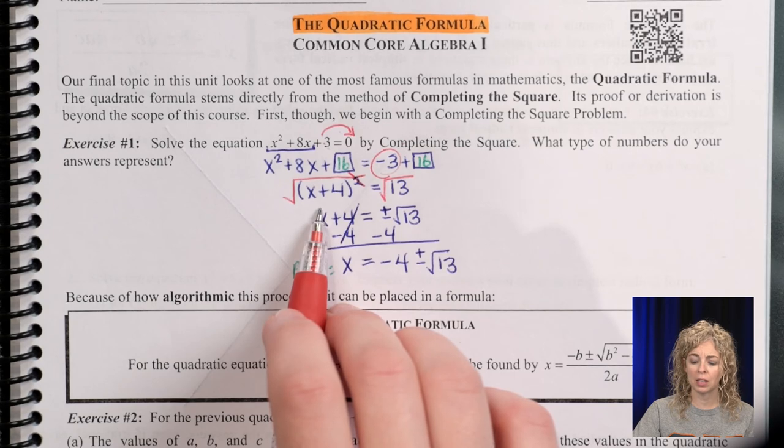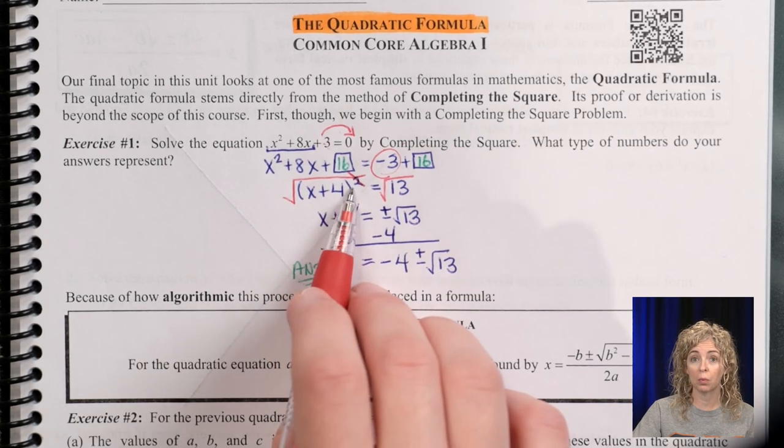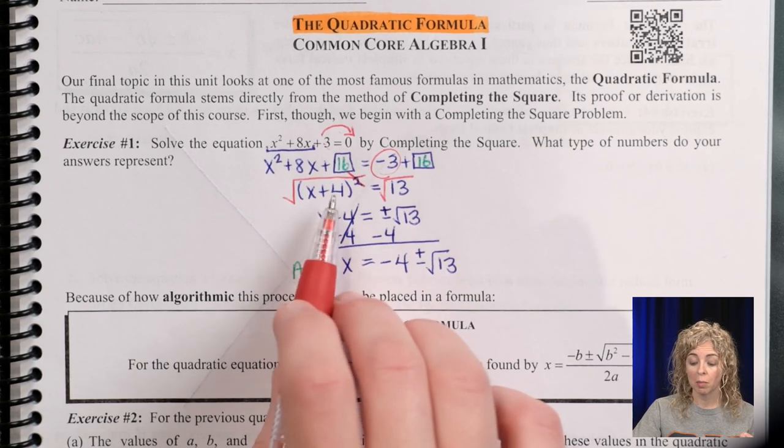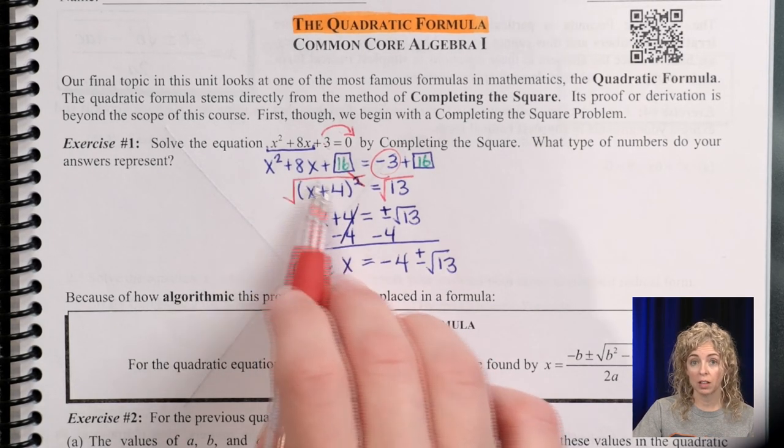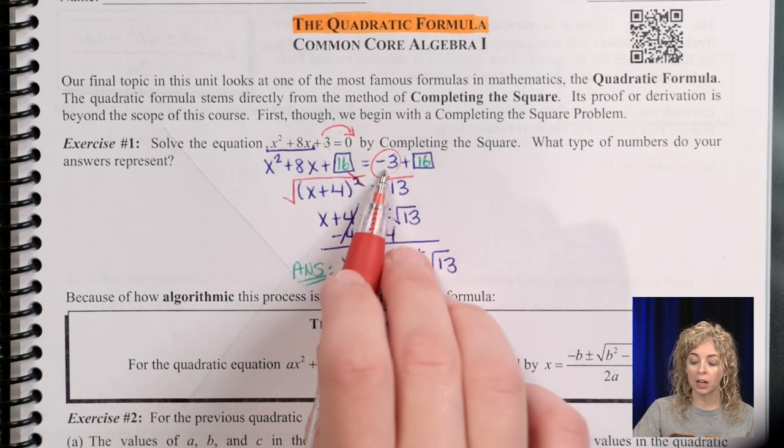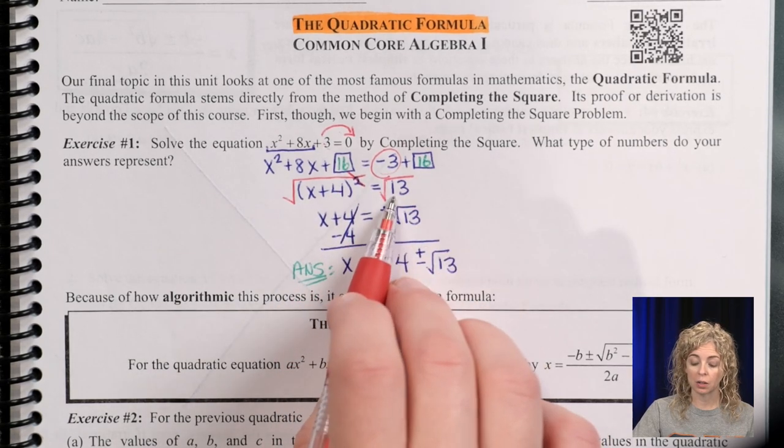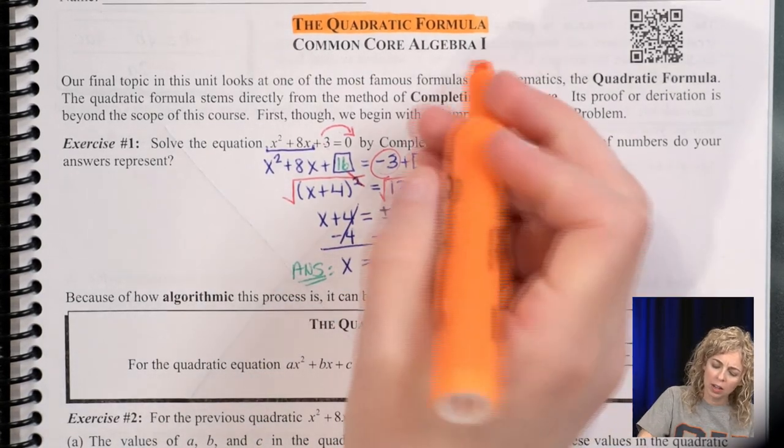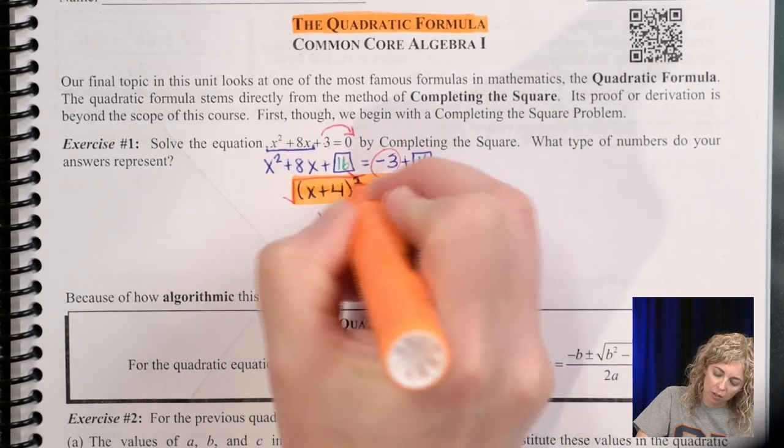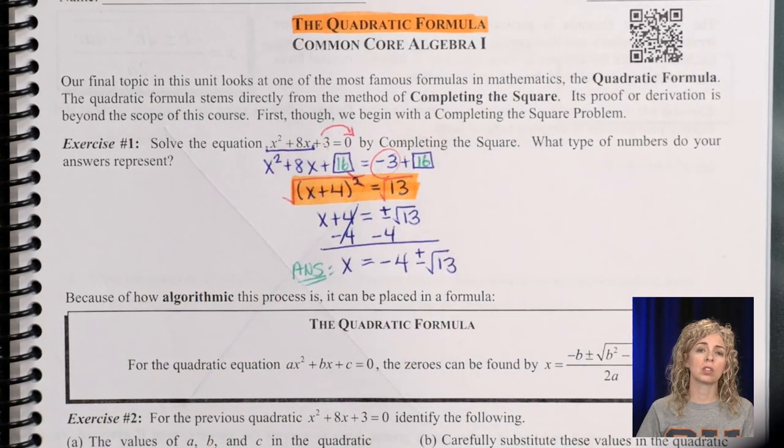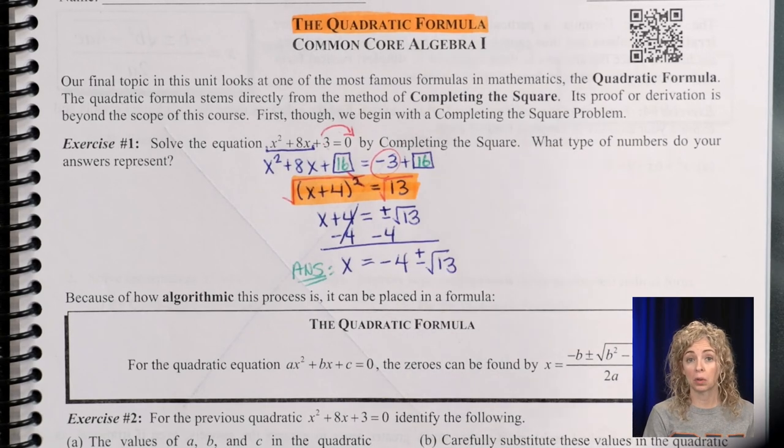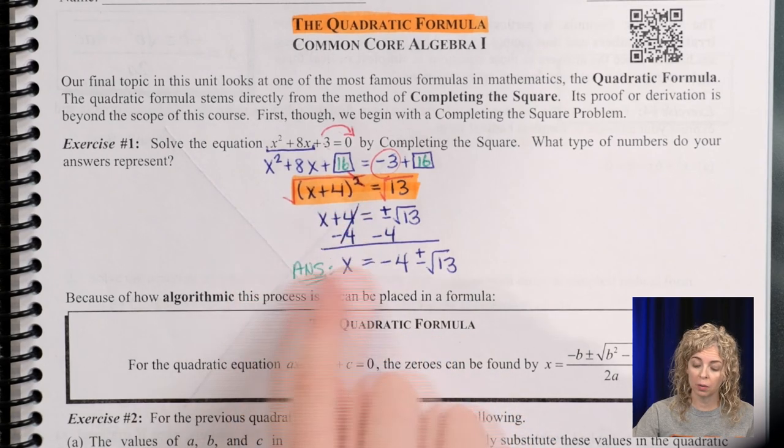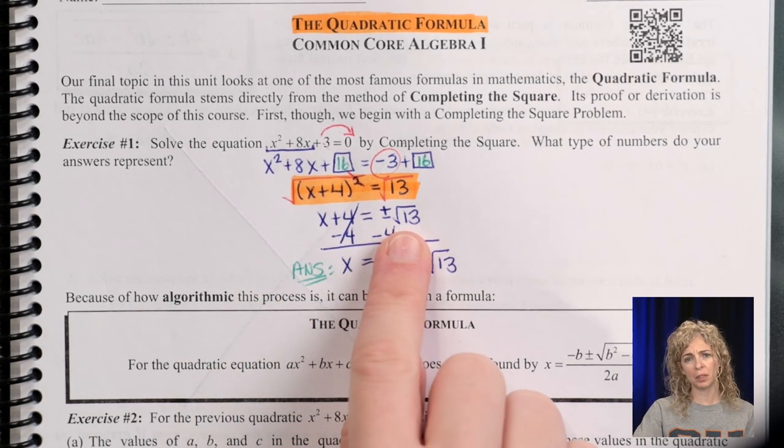So fill in the boxes, factor this side. Now what I didn't write out is the factors of that, I just wrote what two they were. So this means x plus 4 times x plus 4, because 4 plus 4 is 8, and 4 times 4 is 16. And then negative 3 plus 16 is 13.